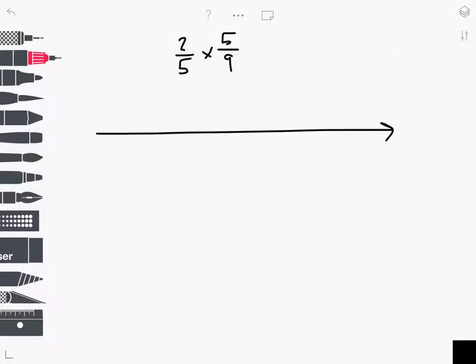I'll start with a number line. Label the endpoints 0 and 1. I'm multiplying two proper fractions, so I know my product is going to fall between 0 and 1.